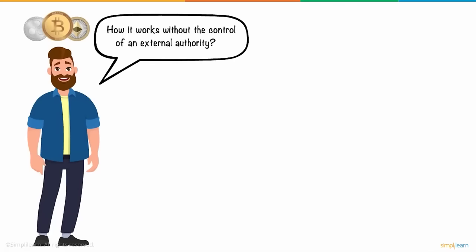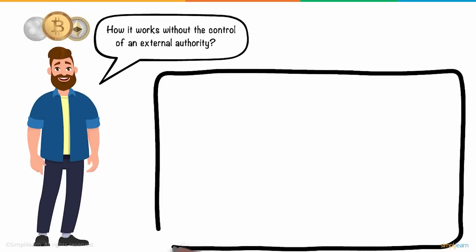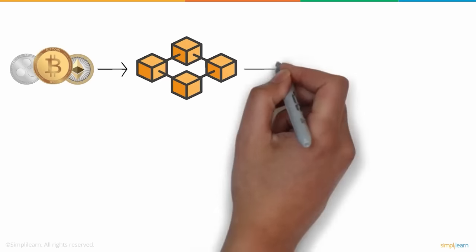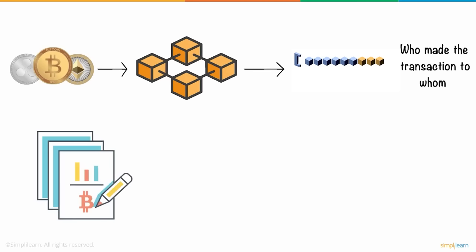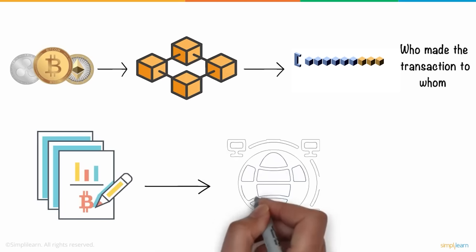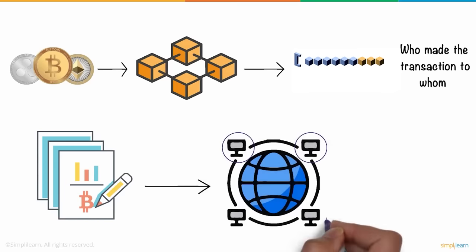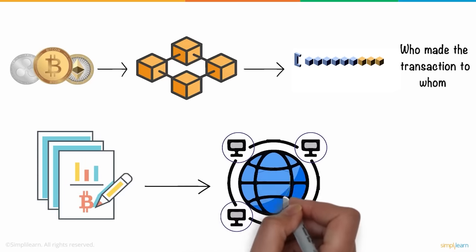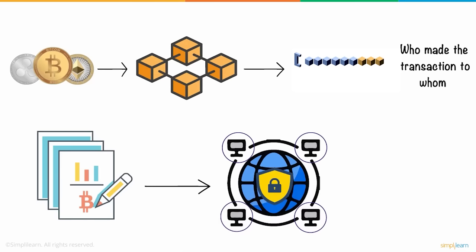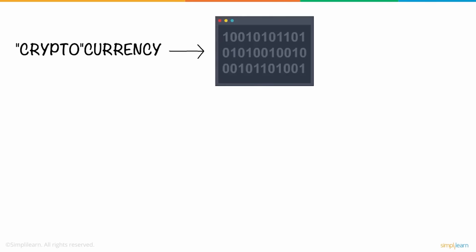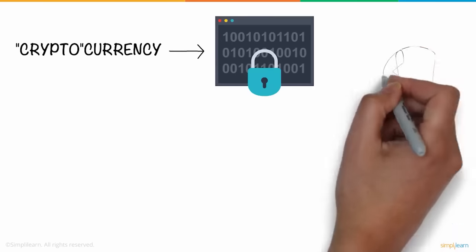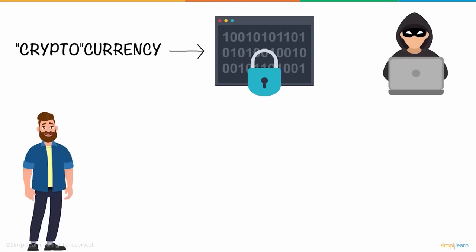Daniel wondered how cryptocurrency works without the control of an external authority. He found that cryptocurrency works on blockchain technology — a set of blocks recording transaction information like who made the transaction, to whom, and the amount, in the form of a digital ledger distributed across the entire network. Data is replicated and stored on each node, making it more secure and impossible to change, hack, or cheat. Each transaction is then verified and validated by every node. The 'crypto' in cryptocurrency stands for cryptography — a method of using encryption and decryption to secure data.